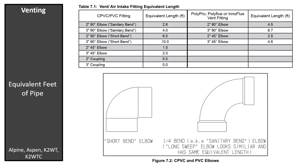The vent length shown in the charts is a total of the equivalent feet of pipe of all the fittings added to the length of straight pipe. Compare the result to the vent charts under the venting section in the I&O manual.